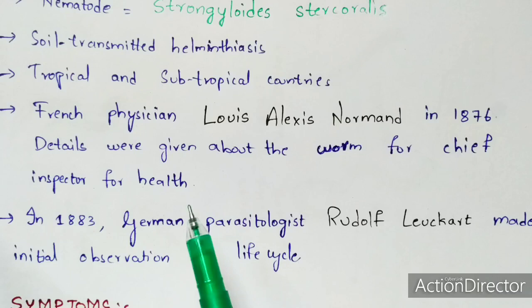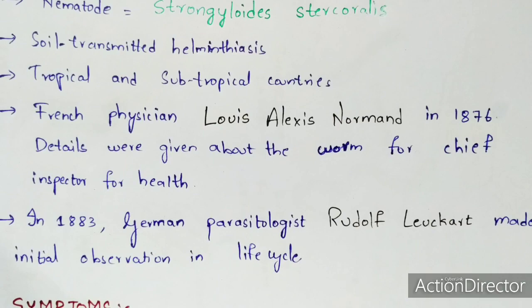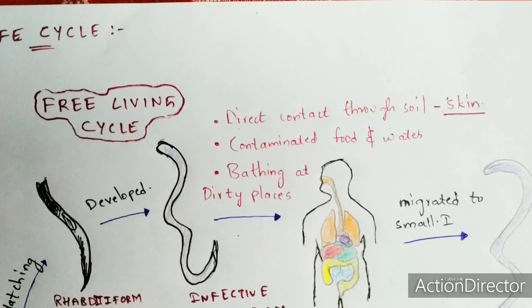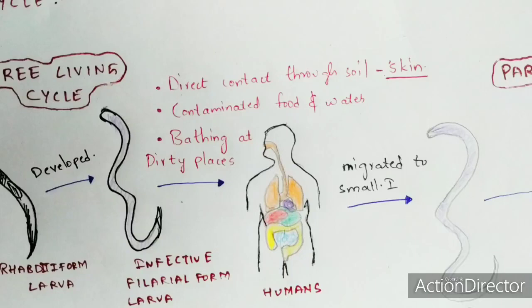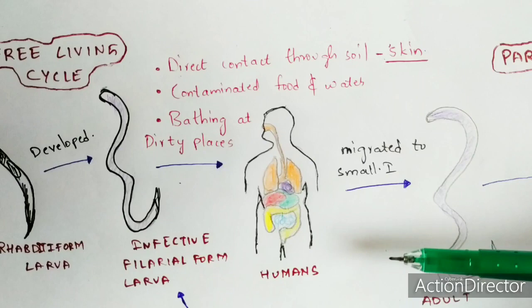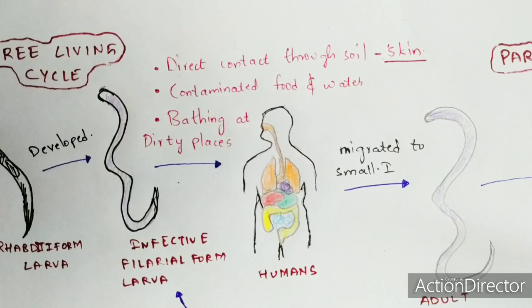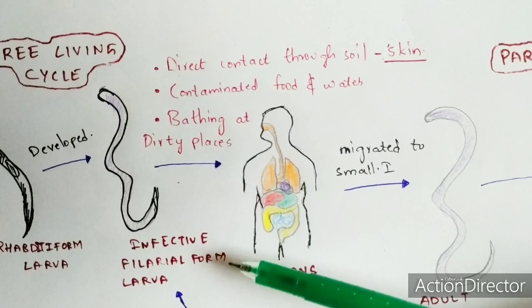Now let us learn about the life cycle. This life cycle occurs in two forms: a free-living cycle and a parasitic cycle. The life cycle begins from the human beings. When a human being has direct contact with soil — such as playing in soil or bathing in dirty water — they become exposed to the infective filariform larvae, which enter the body through the skin.